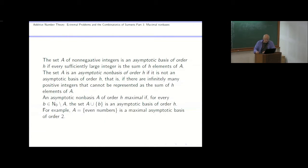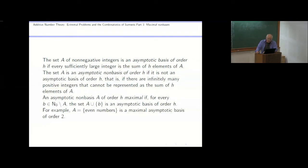Dual to the notion of a minimal basis, we have the notion of a maximal non-basis. So if you have a set of integers that is an asymptotic non-basis of order h, and if you take any number not in the set and add it to the set, and miraculously it becomes an asymptotic basis, then we call the set a maximal non-basis of order h.